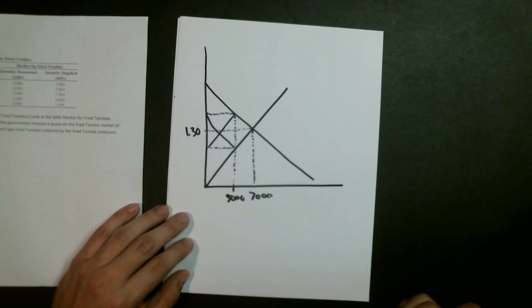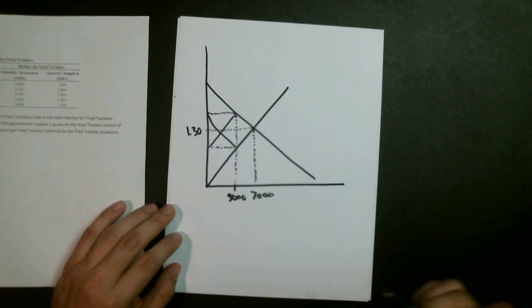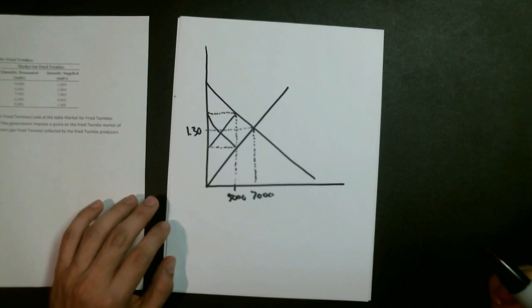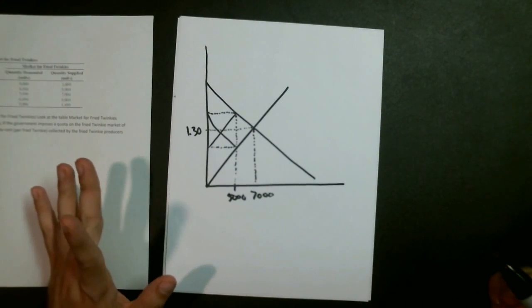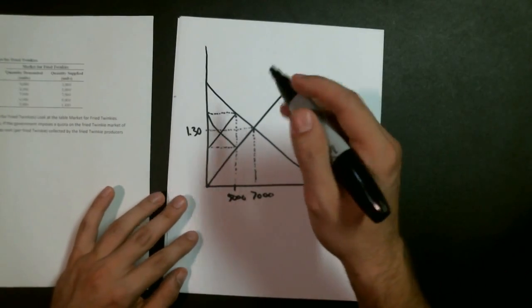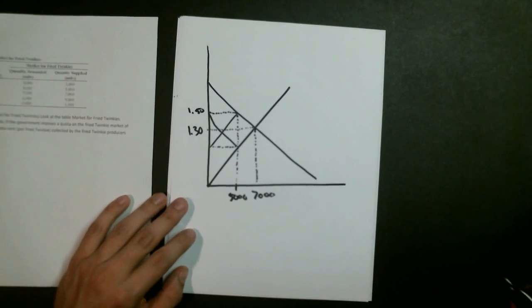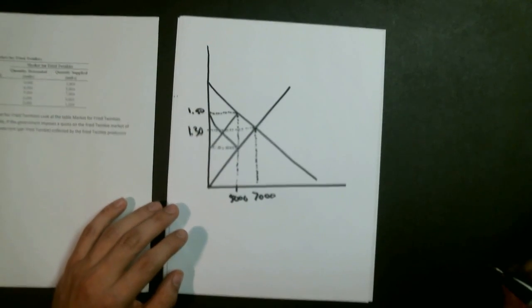But this question is saying per fried Twinkie, so now we have to look at the prices. Since the quantity demanded, or the price when the quantity demanded is 5,000, is $1.50, we write $1.50 up here. That is going to be the price of Twinkies now the quota has been enacted.